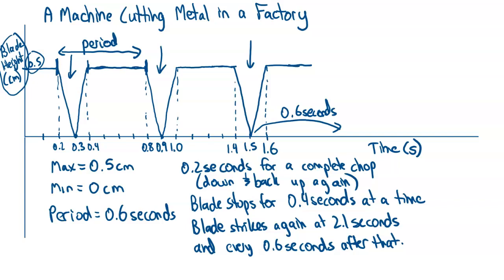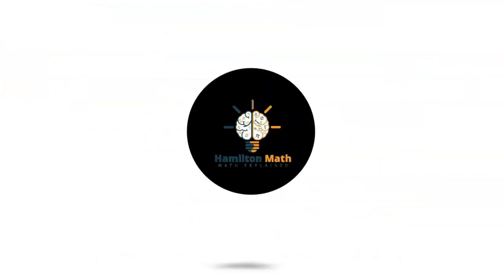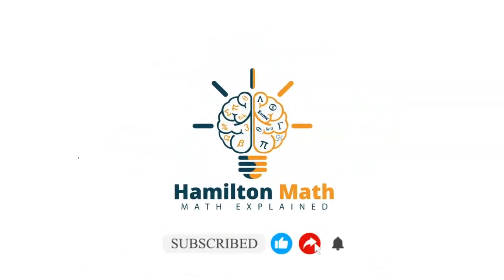One final note: a graph may look periodic because the period is the same, but if the amplitude is changing, it is not periodic. A function must repeat at regular intervals with the same amplitude to be periodic. If this was helpful, please like and subscribe, and check out the next video on sinusoidal functions.